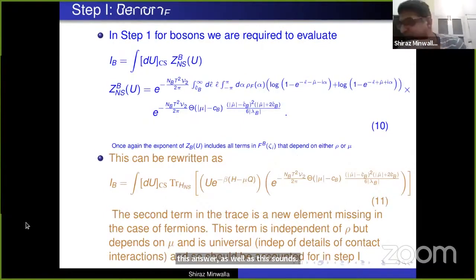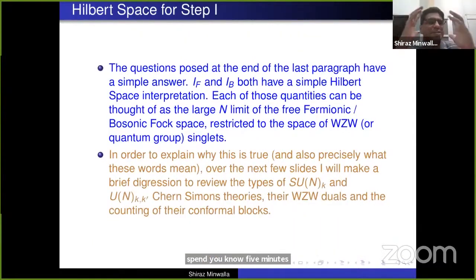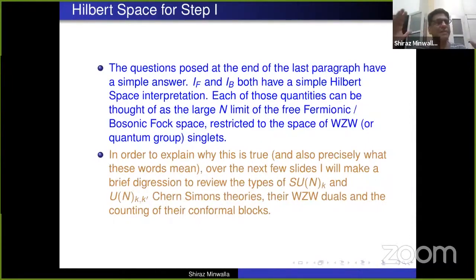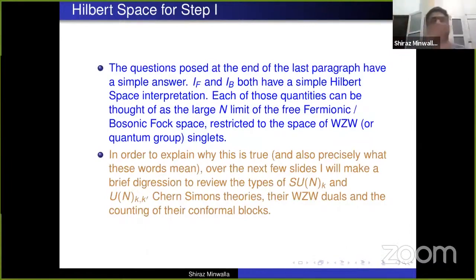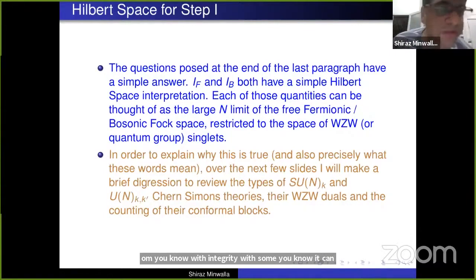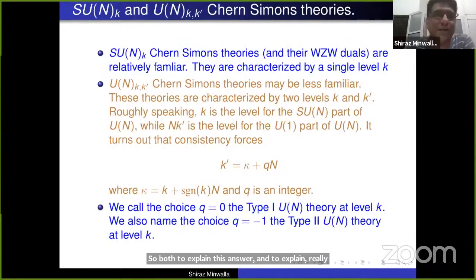I'll give you the answer and then spend a few minutes explaining it. The question posed has a simple answer: what we have to do is take the Hilbert space of free fermions and free bosons and project them to a singlet — just like in our toy model. However, the singlet is not a singlet over classical U(N) theory; it's the singlet over the Wess-Zumino-Witten theory associated with the Chern-Simons theory in question.